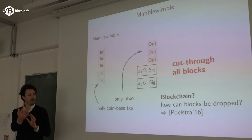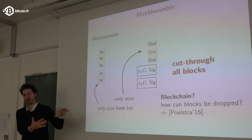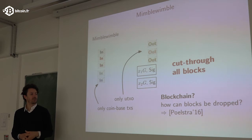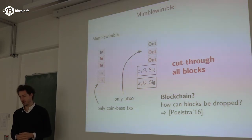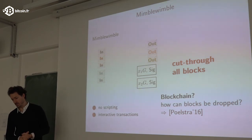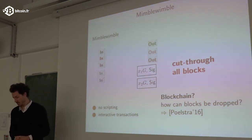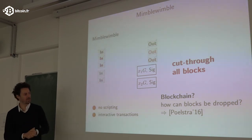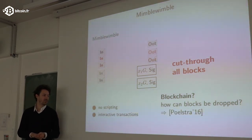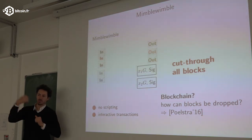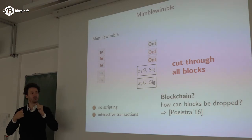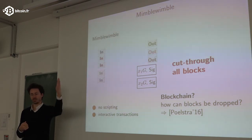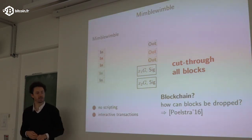Turning this into a full blockchain — deciding which blocks can be dropped and handling all the technical details — is another challenge that Poelstra has a paper on. Mimblewimble's drawbacks are no scripting, and it's interactive: you can't just pay someone by signing a public transaction as in Bitcoin; you need to communicate the randomness so the other party can create the excess values and signatures.